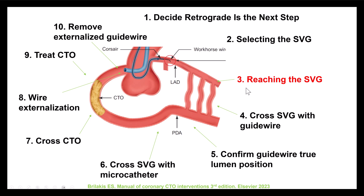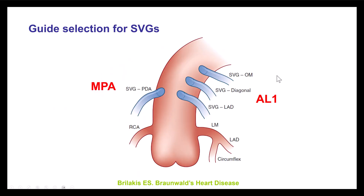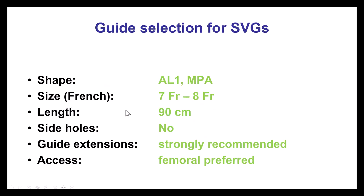Step number three is to reach the saphenous vein graft. The guides to use are Amplatz Left for the left-sided bypass grafts, which provides good support, or usually the multipurpose catheter for saphenous vein grafts to the PDA. In terms of size, we prefer larger size — 7 or 8 French. It's ideal for the guides to be short, 90 cm or even shorter. Side holes are generally not used. Guide extensions are very useful to increase the support, and often engaging the vein grafts is better going through femoral access.